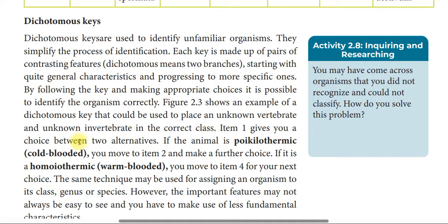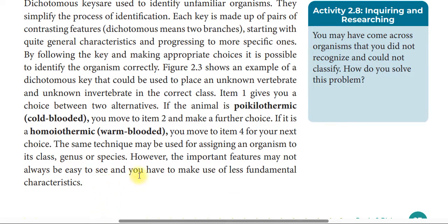Item 1 gives you a choice between two alternatives. If the animal is poikilothermic, or cold-blooded, you move to item 2 and make a further choice. If it is homeothermic, or warm-blooded, you move to item 4 for your next choice. The same technique may be used to assign an organism to its class, genus, or species. However, the important feature may not always be easy to see, and you may have to use less fundamental characteristics.